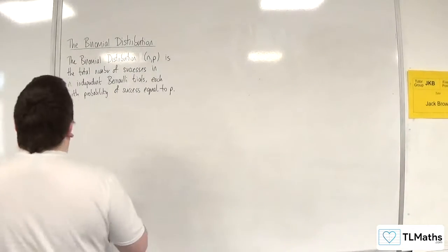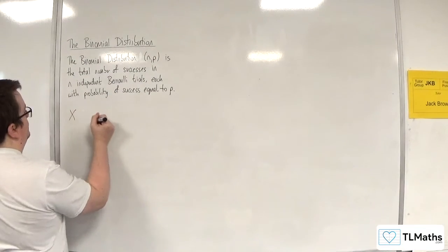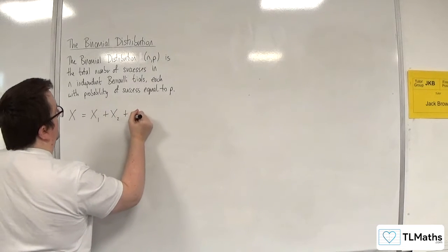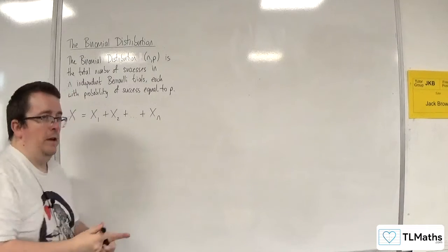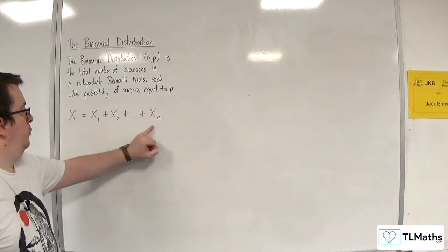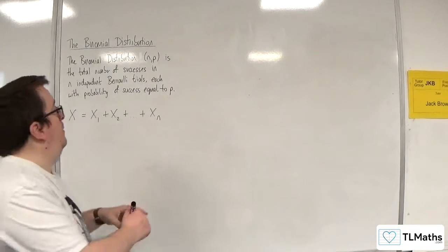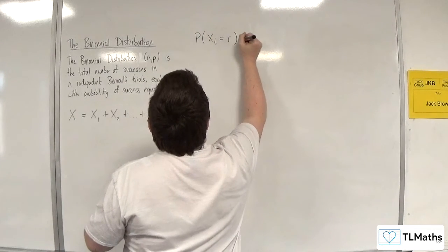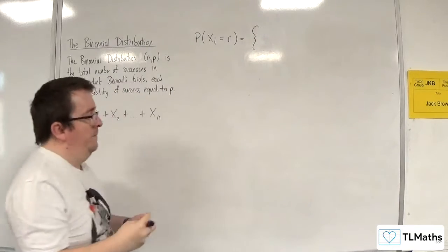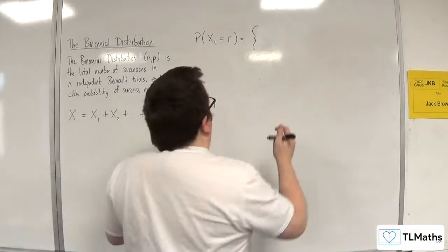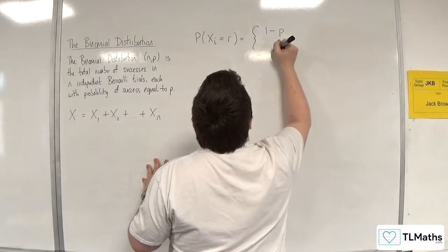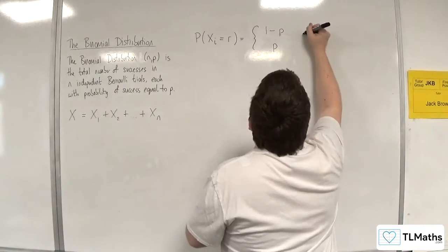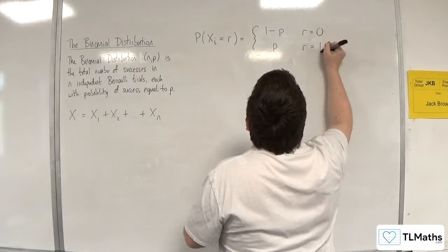So X, the binomial distribution, is the sum of n independent Bernoulli trials. Now, the probability of each of these occurring, we write that as either being 1 minus P or P, and we can say that happens when R is 0 and this happens when R is 1.